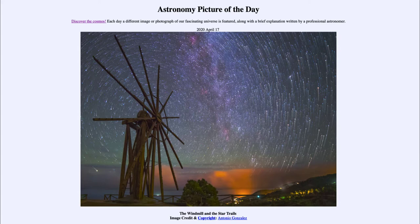In the foreground we see a windmill, and it is actually centered and designed so that it will block the star Polaris and the North Celestial Pole, which are hidden behind the central portion of the windmill. Polaris is very close to the North Celestial Pole, which is the central point in the northern sky, and everything seems to revolve around it.